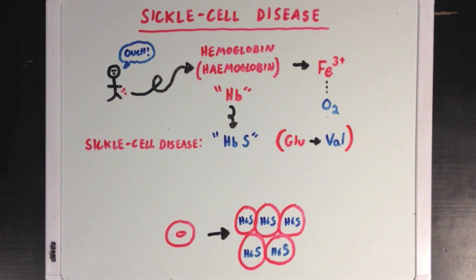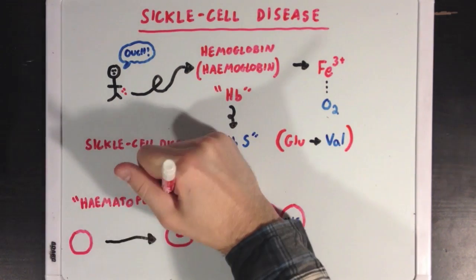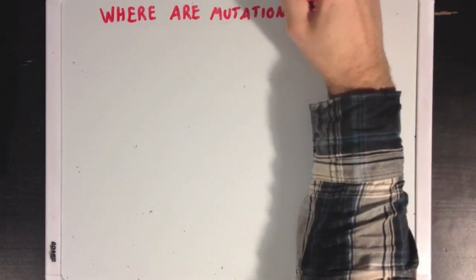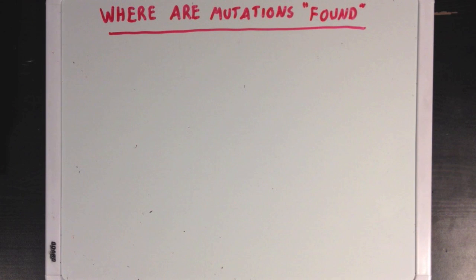Just as a side point, remember that red blood cells are initially generated from hematopoietic stem cells through a process called hematopoiesis. So where are mutations found, and how did they come up in the first place? Let's look at a couple of different possible mistakes that could lead to an incorrectly produced protein.